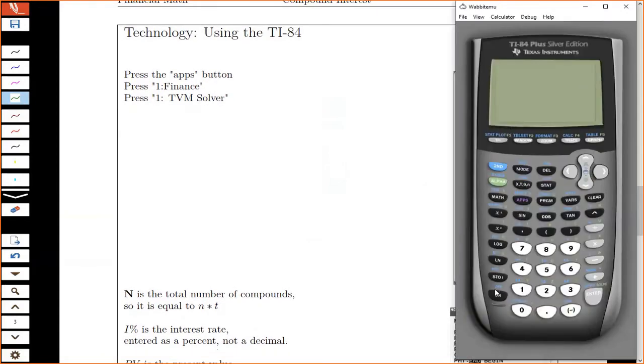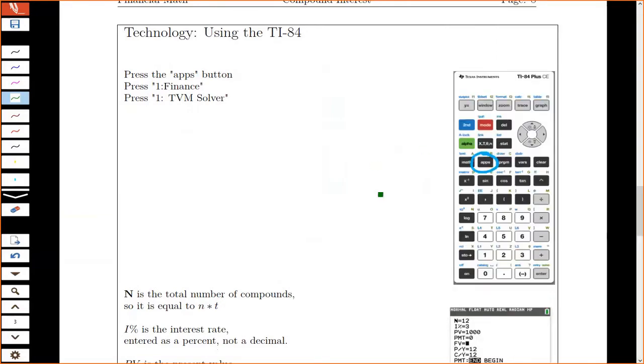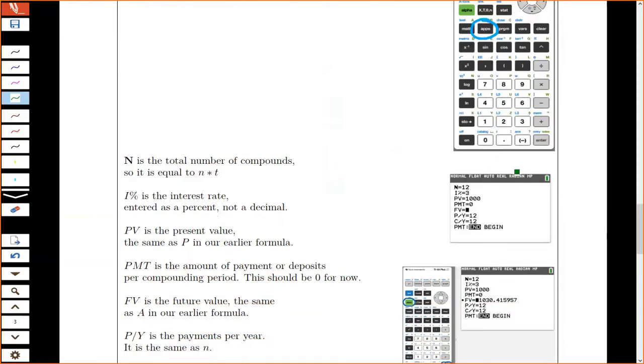So let me bring up a calculator, and I'll walk you through how to do this. First what you do is you press the Apps button, and the first thing on there should be Finance. And the first thing on there is this TVM solver. We hit Enter. So this is our solver, and this is what it looks like.